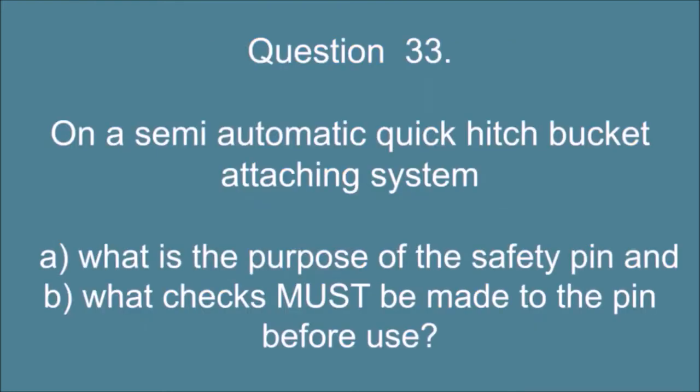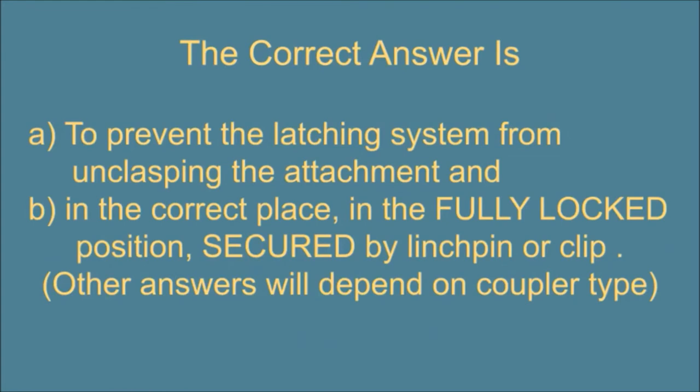Question 33. On a semi-automatic quick hitch bucket attaching system, A) What is the purpose of the safety pin? B) What checks must be made to the pin before use? The correct answer is: A) To prevent the latching system from unclasping the attachment. B) In the correct place, in the fully locked position, secured by linchpin or clip. Other answers will depend on coupler type.